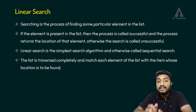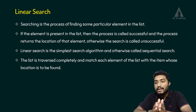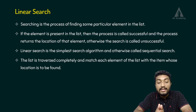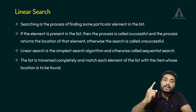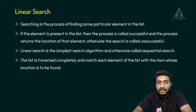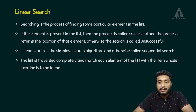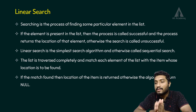In linear search, the list is traversed completely and each element of the list is matched with the item whose location is to be found. If a match is found, then the location of that particular item is returned.